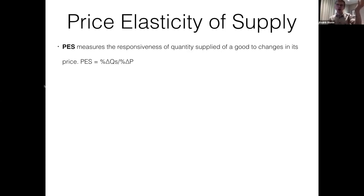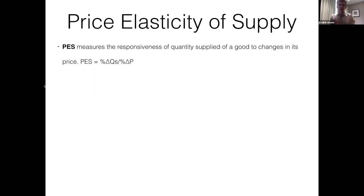Imagine you're a supplier and suddenly you see the price of watches has gone up — you can sell them for a higher price. Naturally, the law of supply tells us that as a supplier we're going to try to supply more watches. But what PES measures is exactly by how much does my quantity supplied change. Am I going to double it? Triple it? What exactly is going to happen to my quantity supplied?